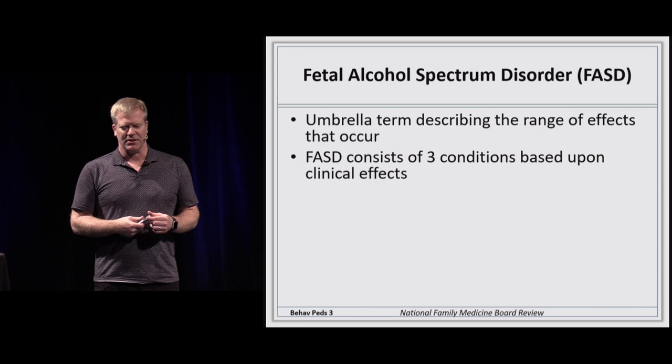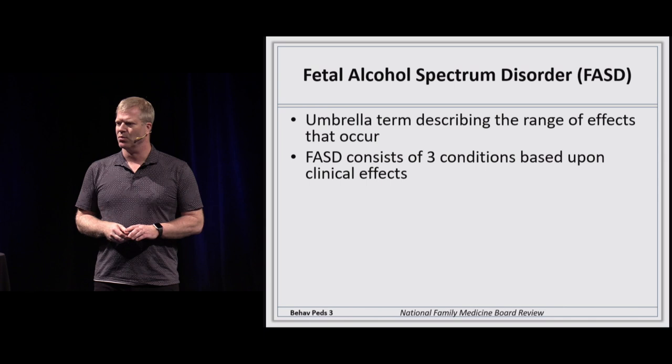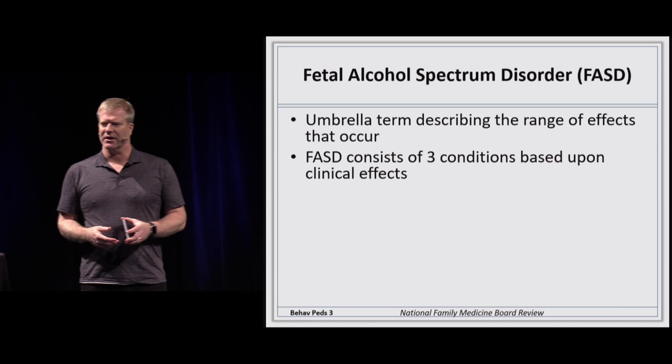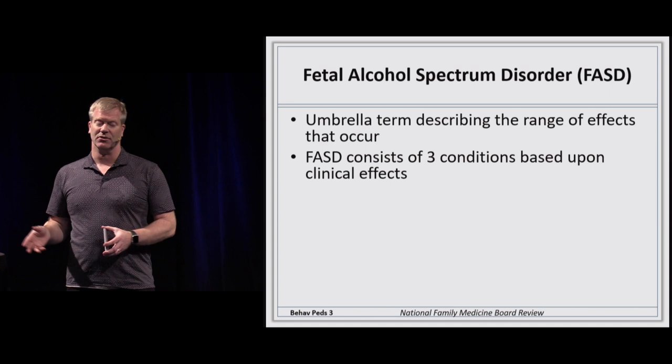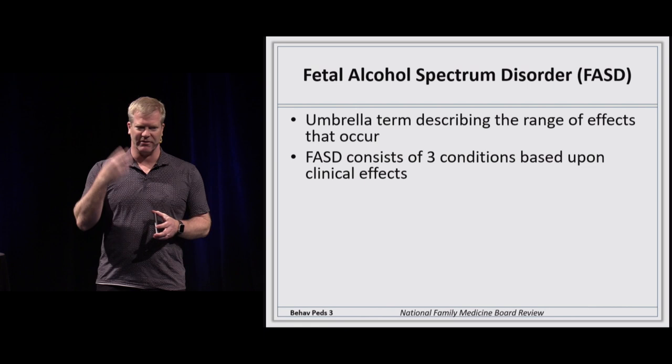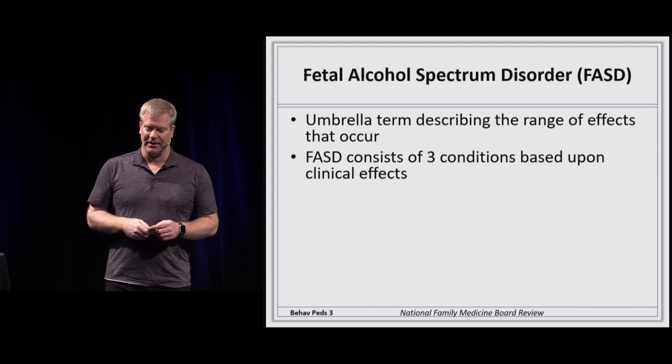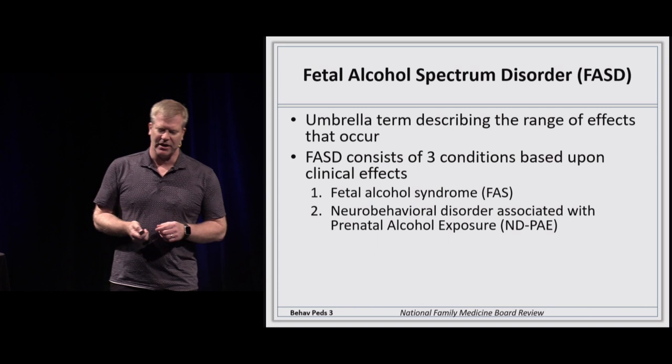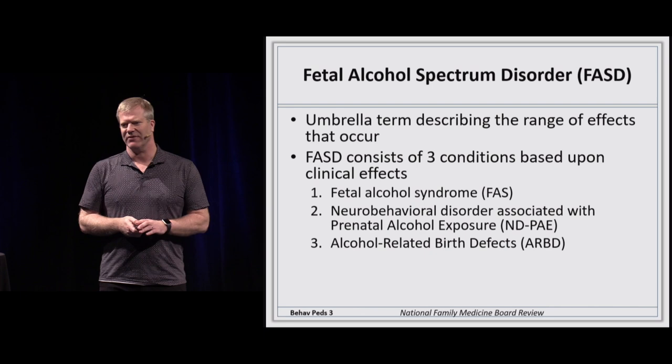Fetal alcohol spectrum disorder is an umbrella term covering three major categories. The first is fetal alcohol syndrome, which most are familiar with. The second is the neurobehavioral disorder — same behavioral findings but without the facial features. The third is alcohol-related birth defects, which involves only birth defects due to alcohol, with none of the facial or behavioral features.